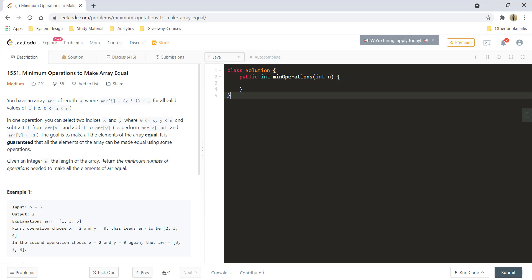In one operation, you can select any two indices x and y and subtract 1 from array of x while adding 1 to array of y. That is, you perform these operations.